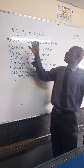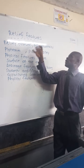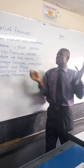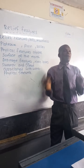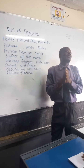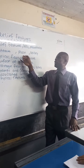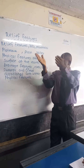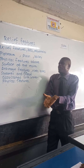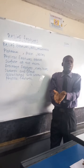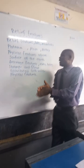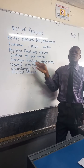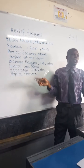So relief features — examples: we have hills, we have mountains, we have plateaus. We have plains, then we have valleys. They are found above the surface of the earth.